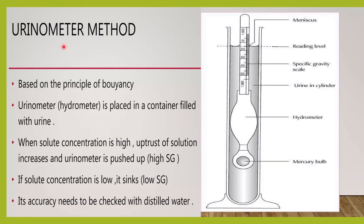The urinometer method is based on the principle of buoyancy. The urinometer is placed in a container full of urine. Agar urine mein solute concentration zyada hai — if there are a lot of solutes — it will push this urinometer upward. There will be upthrust of the urinometer and the specific gravity will be high. When the concentration of urine is less, it will sink, and the specific gravity will be less.